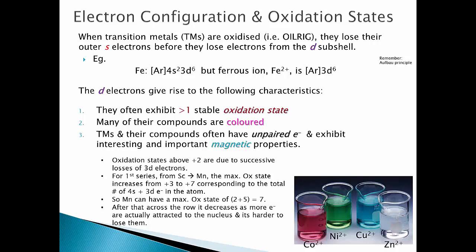Looking at the pictures here, we've got cobalt 2+, nickel 2+, copper 2+, and zinc 2+, and you can see they all have different colors. Remember zinc is not a transition metal, but copper, nickel, and cobalt are transition metals. They give us these beautiful colors, and you can see they're all different.